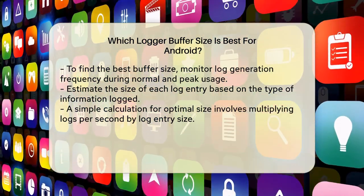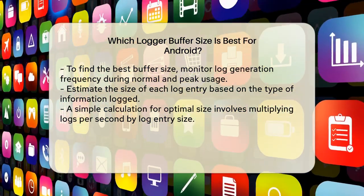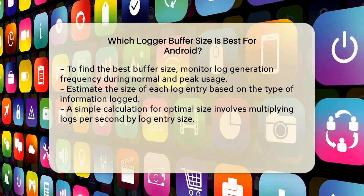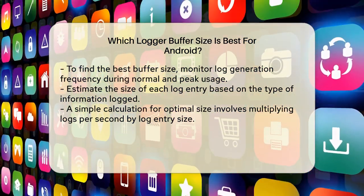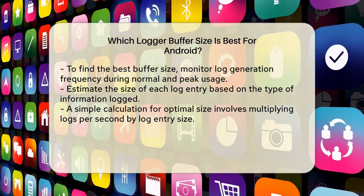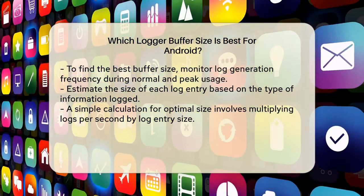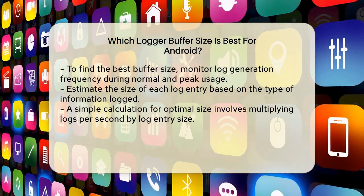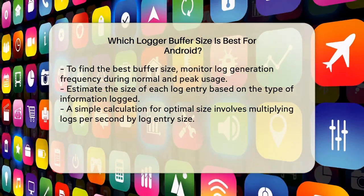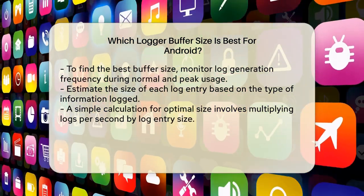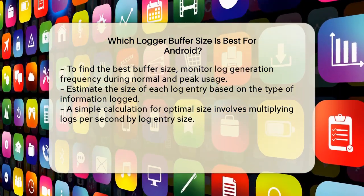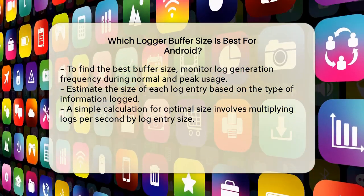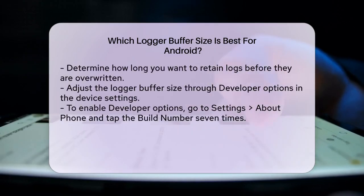Here's a simple way to calculate the optimal size: multiply the logging frequency (logs per second) by the size of each log entry to get the required buffer size per second. Then decide how long you want to keep the logs before they are overwritten, and multiply the buffer size per second by this retention period in seconds.